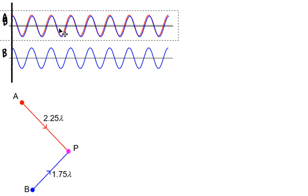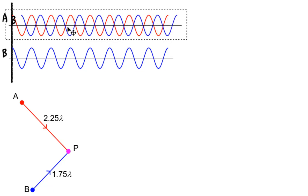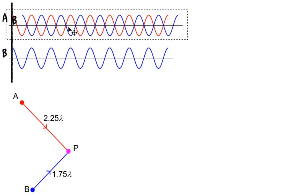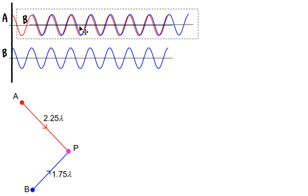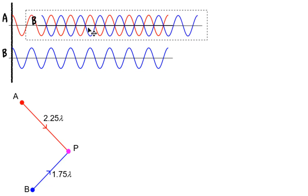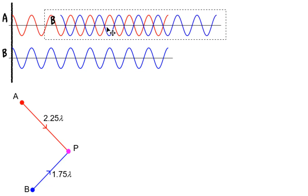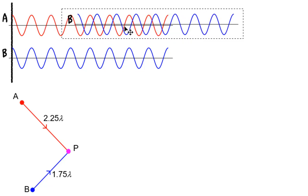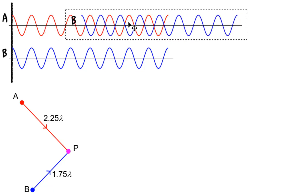And you are going to get destructive interference whenever the path difference is half a lambda, one and a half lambdas, two and a half lambdas, three and a half lambdas, and so on.